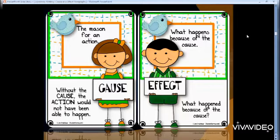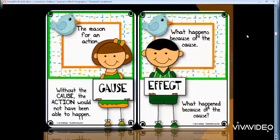Cause and effect are connected. I can't have a result without a reason. I can't have an effect without a cause. I can't have a reaction without an action — the relationship is very tight. I can't have one without the other, and that's why we say there's a relation between them.